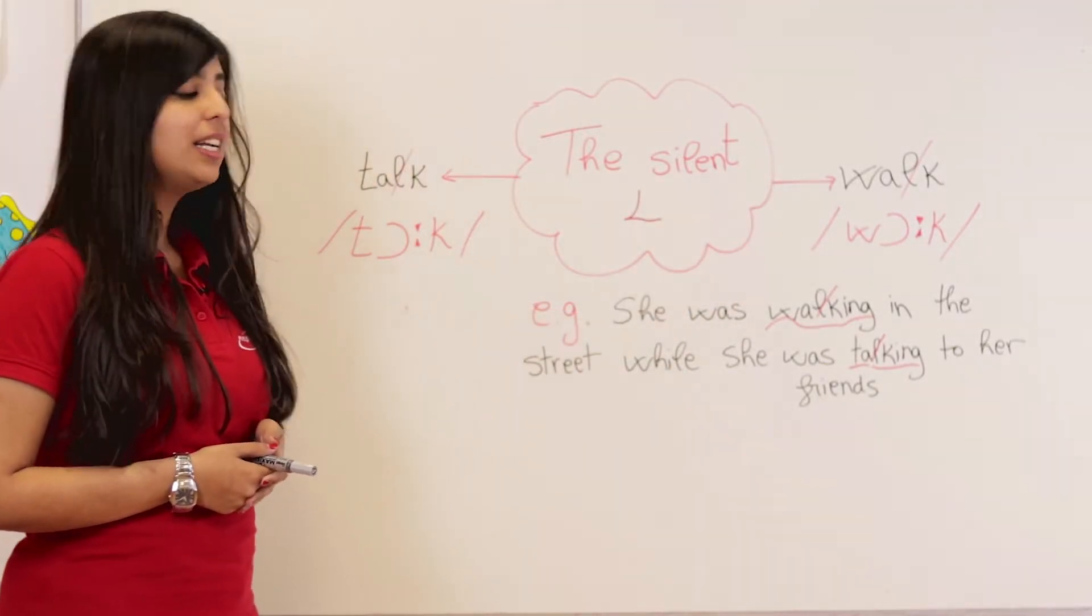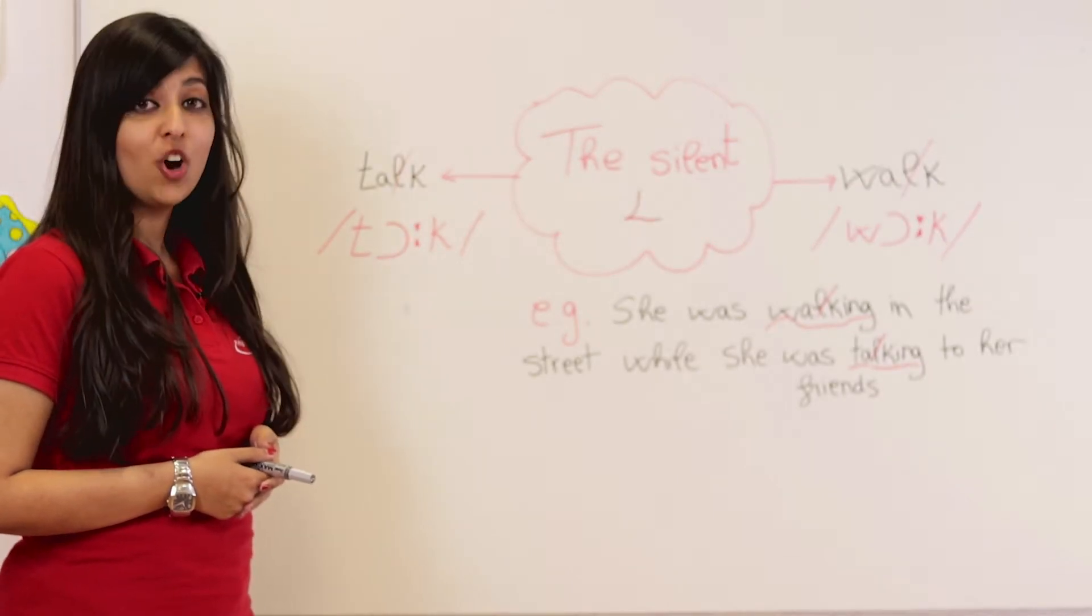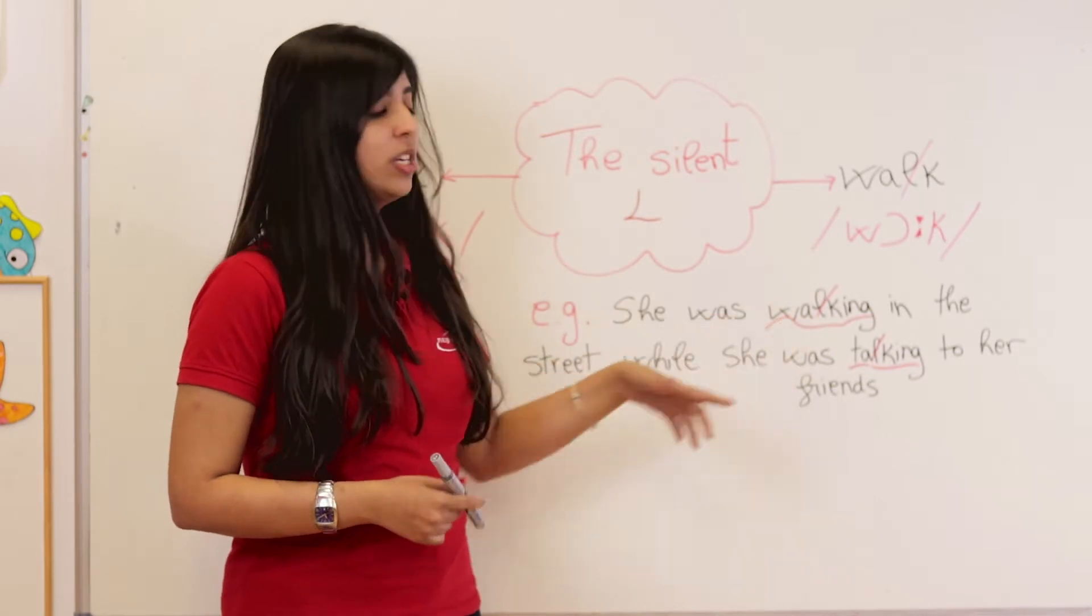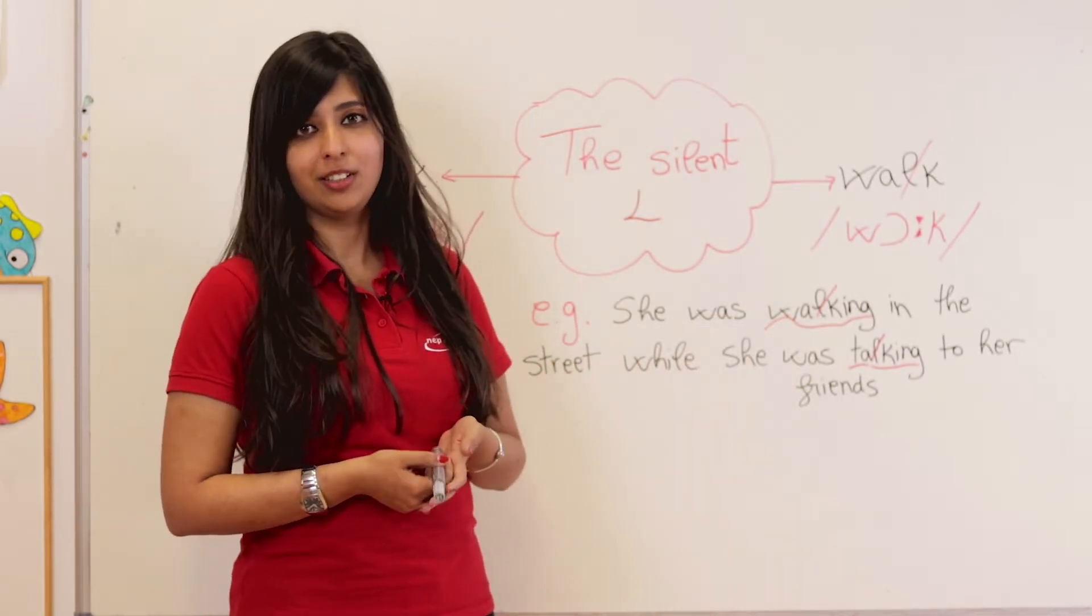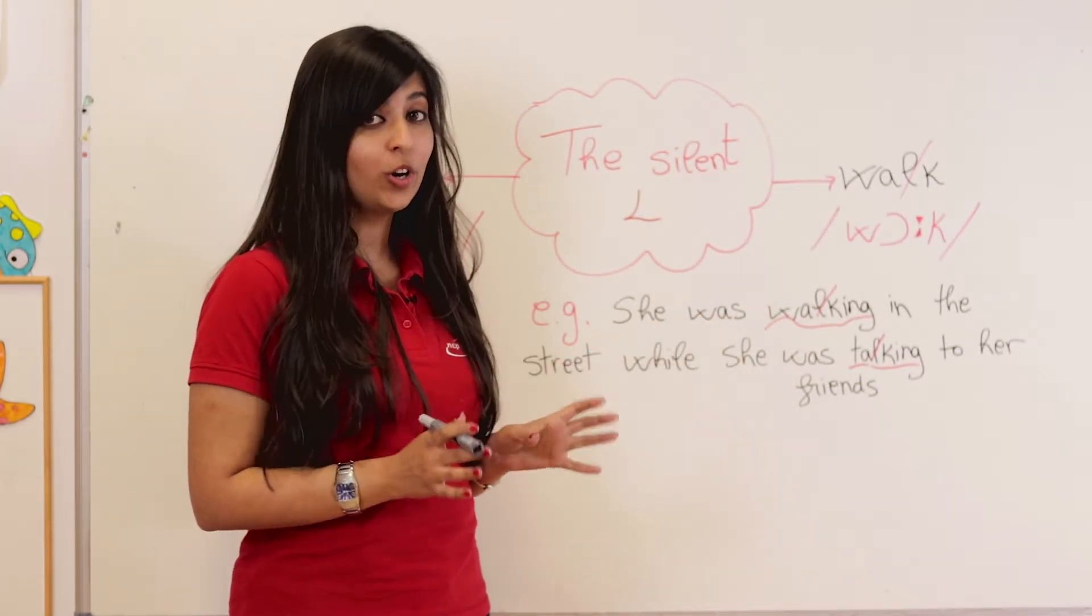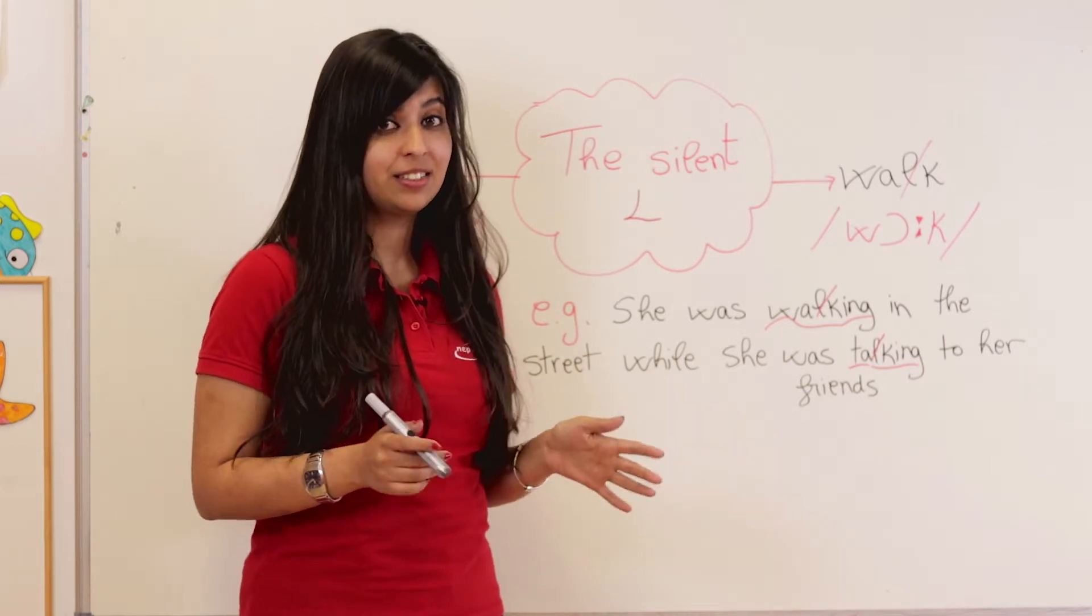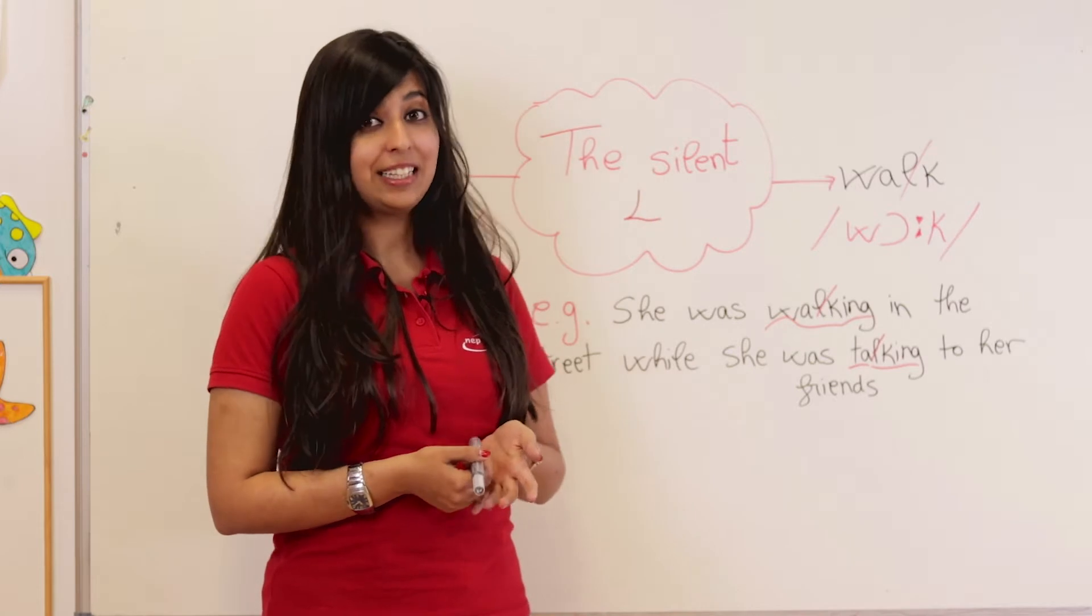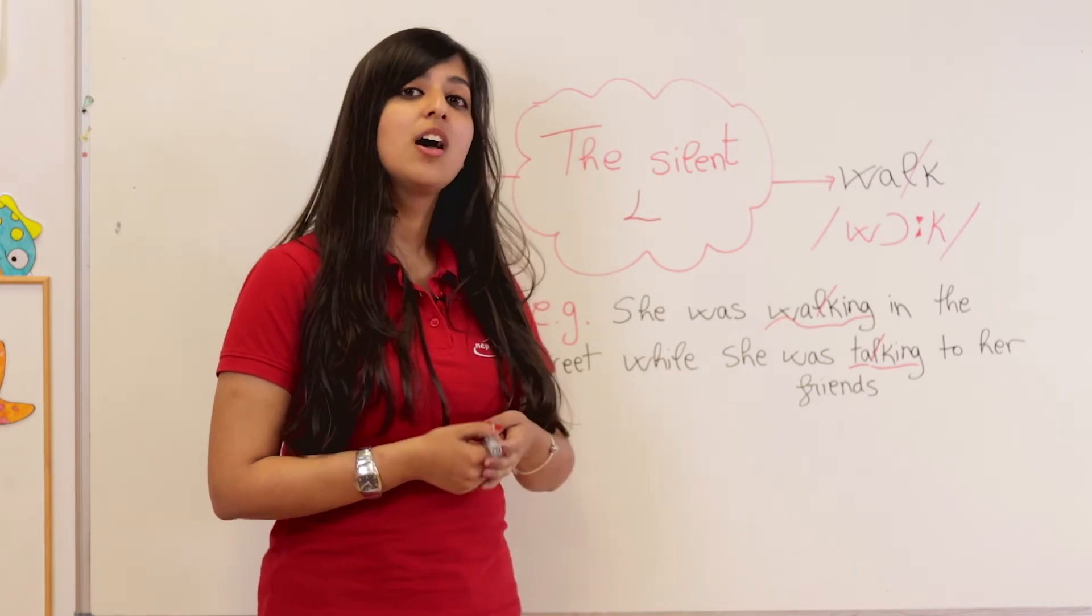She was walking in the street while she was talking to her friends. So you can notice that I'm not saying 'she was walking' or 'she was walking', I'm saying 'she was walking'. The L is totally silent. And here I'm not saying 'she was talking' or 'talking', okay? I'm saying 'she was talking'.